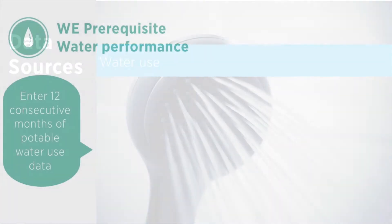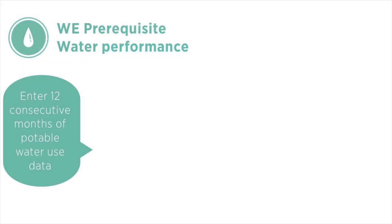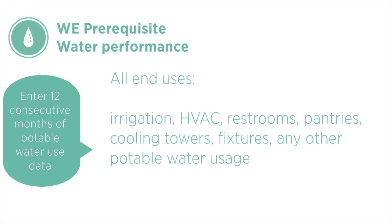Projects enter data into the platform for 12 consecutive months of potable water use. This includes all end uses: irrigation, HVAC, restrooms, pantries, cooling towers, fixtures, and so forth.